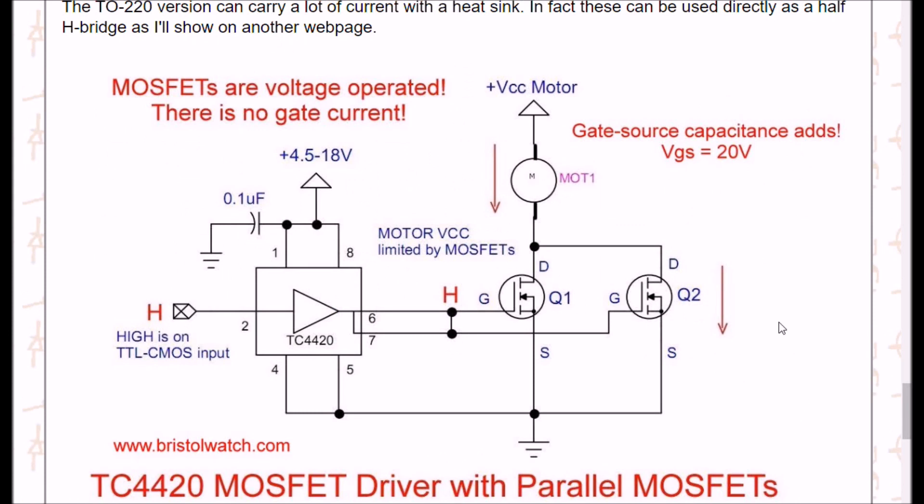In the ground side of the H-bridge, I instead connected this circuit here, a TC-4420 and a couple of parallel N-channel MOSFETs. A high on the input will switch on the power to the H-bridge or complete the current path, I should say, through ground.